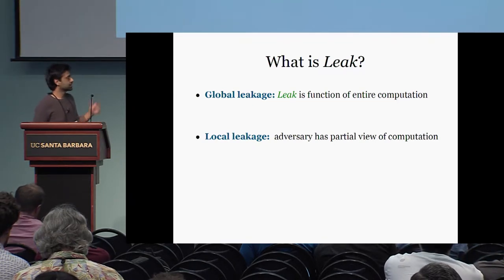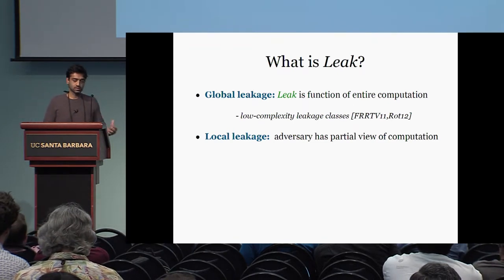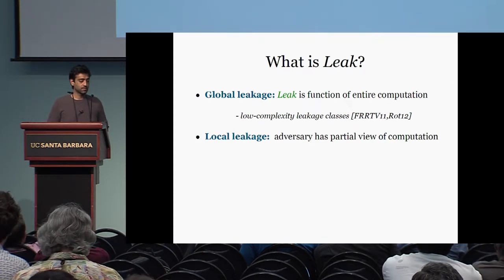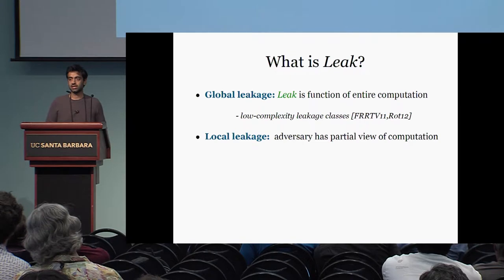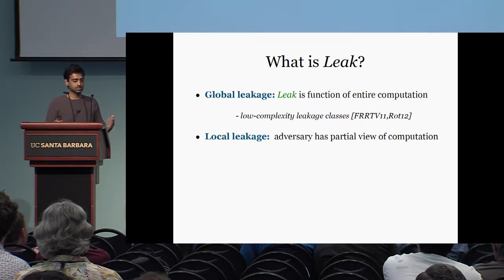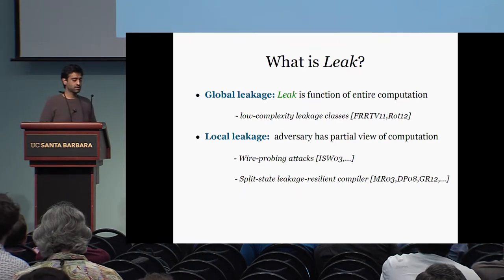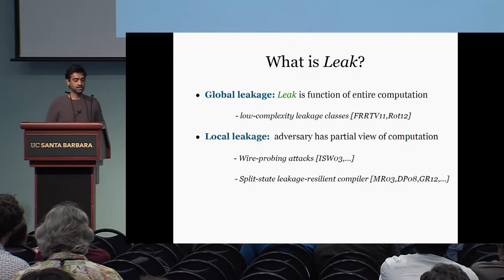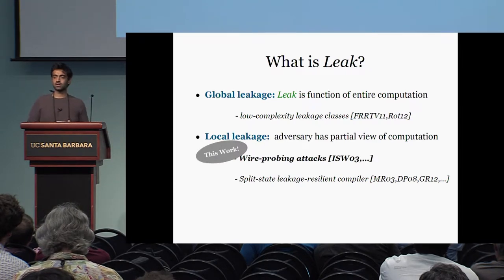There are many works studying both these categories. In the case of global leakage, some works resist attacks against leakage functions in low-complexity classes, for instance leakage-resilient circuit compilers secure against AC0. In the case of local leakage, two popular settings are wire probing attacks and split-state leakage-resilient circuit compilers. In this talk, I'm going to focus on wire probing attacks.